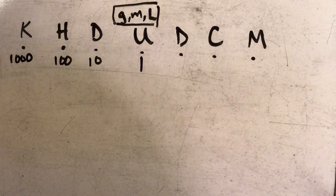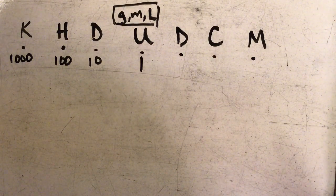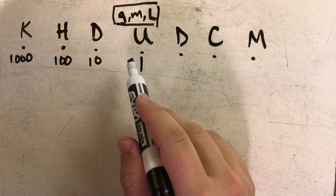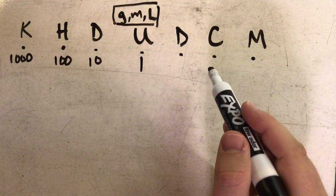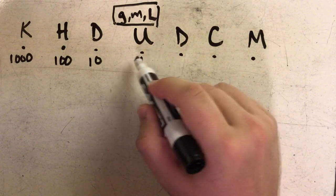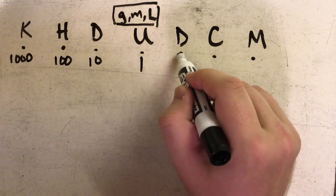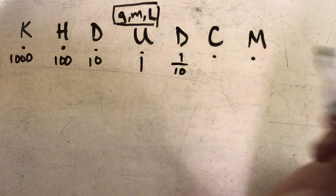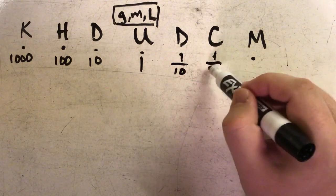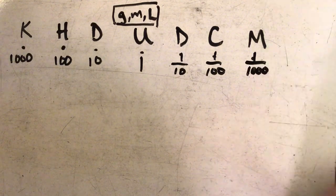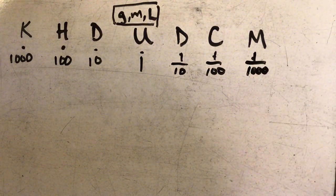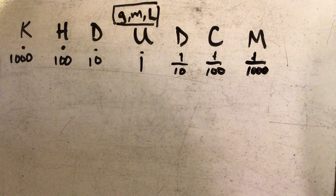In addition to that, if I'm getting smaller, I'm really taking one tenth of the value to the left. So one decimeter would be one tenth of a meter, one centimeter would be one one hundredth of a meter, and one millimeter would be one one thousandth of a meter.